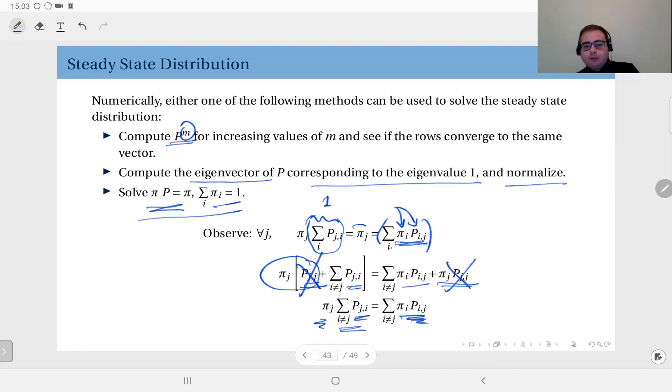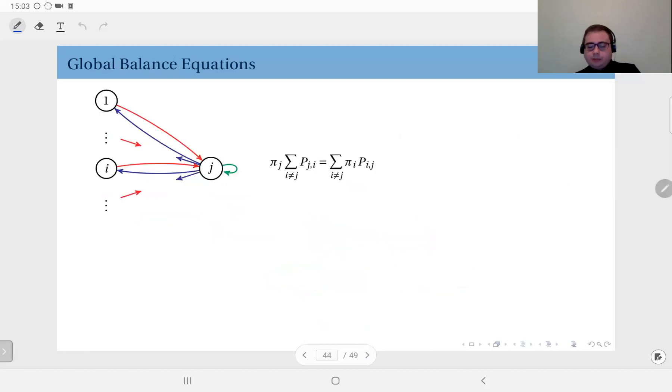Be careful now. These we call global balance equations. This is the general form. Of course, this is a little bit tricky to keep in mind, but if you understand what this signifies, it will be easier. Take state j.